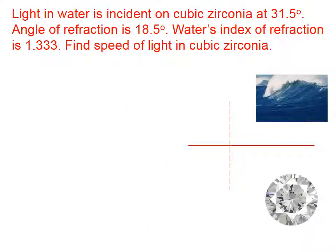This time, we have light that starts out in water and it's incident on cubic zirconia at an angle of 31.5 degrees. We're told what the angle of refraction is, and we're told what water's index of refraction is.